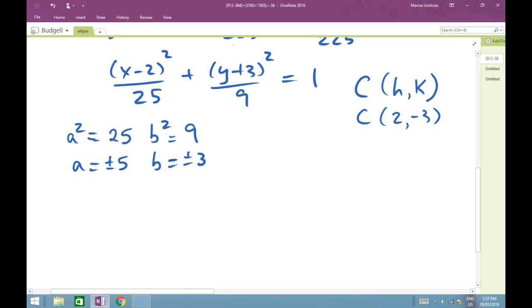So now we have to find our vertices. The vertices are, because the 25 is under the x-coordinate here, I'm going to have to add and take away my a term from the x-coordinate of my center, leaving my y-coordinate just where it's at. So my vertices would be, if I add 5 to 2, I would get (7, -3). And the other vertex, if I say 2 - 5, it would be (-3, -3). Noting that the y-coordinate does not change.